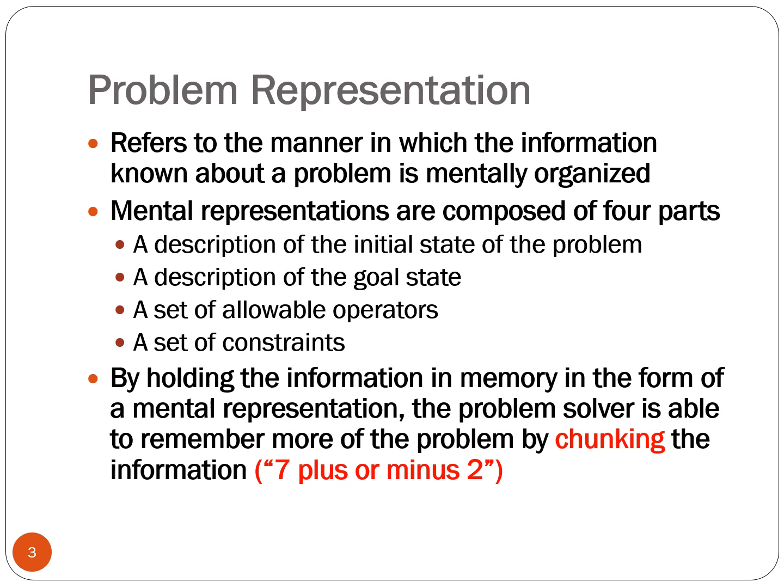Once we have the definition of our problem, we then move to problem representation. Problem representation is like taking an inventory of all the pieces of knowledge or chunks we already have access to in our memory. These mental representations are made up of four parts. The first two are a description of the initial state of the problem and a description of the goal state, which have pretty much been described already.